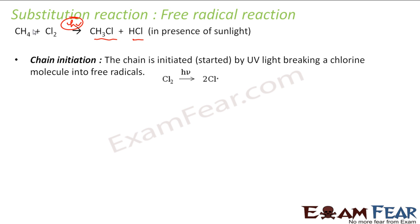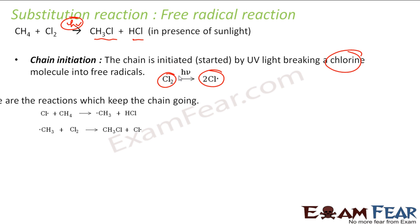It has three steps. The first step is the chain initiation step. This is initiated by sunlight, where we break chlorine into free radicals. In the presence of sunlight, the chlorine is broken into free radicals — this is the homolytic cleavage of chlorine.